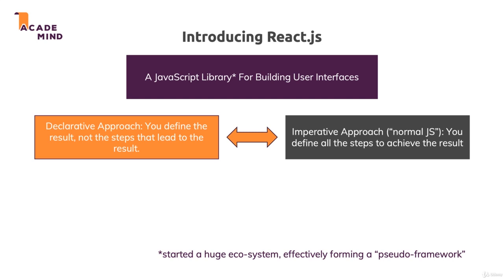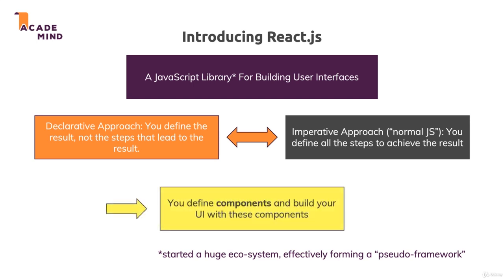So in React.js we instead focus on the result, and we do so by using components. Components is a concept introduced by React — basically these are UI building blocks which we define, and then we compose our user interface from these components. Every component can also define what it should render under which circumstance, and React will then wire up everything behind the scenes and implement all these steps for us, so that we don't have to write the steps — we just define the results. That's React.js in a nutshell. Now let's have a look at how it actually works when we write some code.